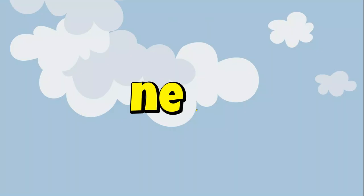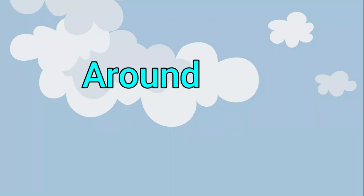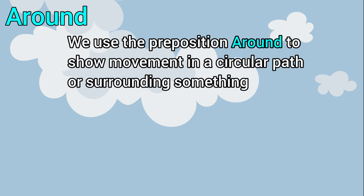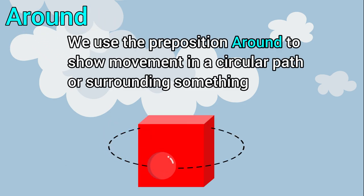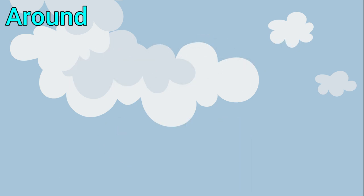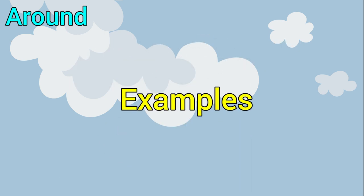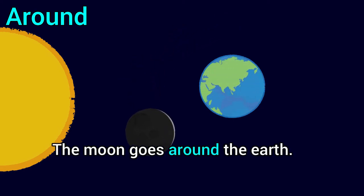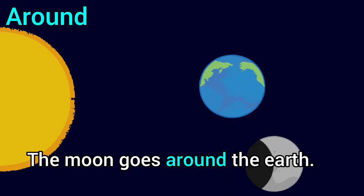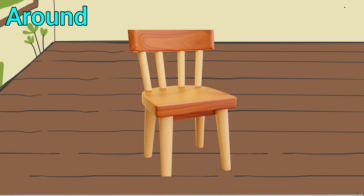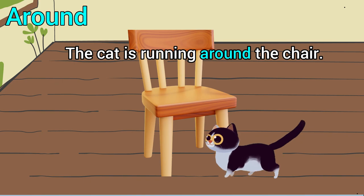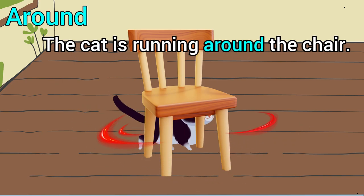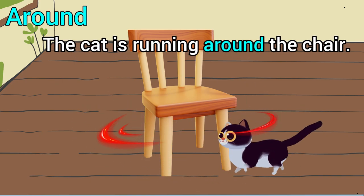Next, 'around.' We use the preposition 'around' to show movement in a circular path or surrounding something. Examples: the moon goes around the earth. The cat is running around the chair.